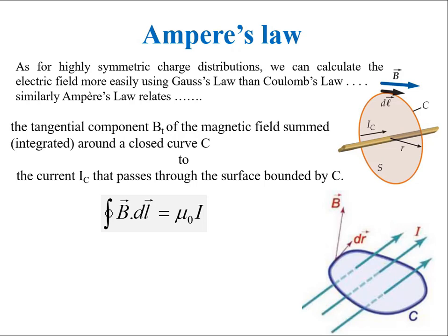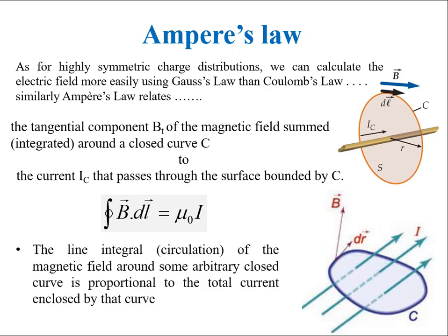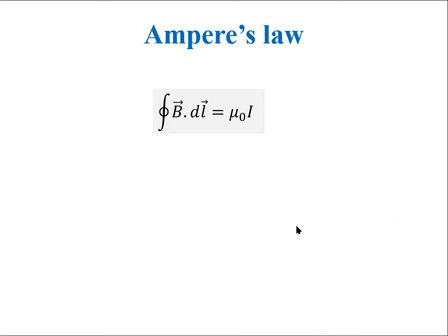So, in abstract form, the line integral or circulation of the magnetic field around some arbitrary closed curve is proportional to the total current enclosed by that curve. But this form is an integral form where the current can be written as the surface integral of current density. Here, the current density is defined as the amount of current passing per unit surface area normal to it. Since it is normal to the surface, it is a vector quantity.